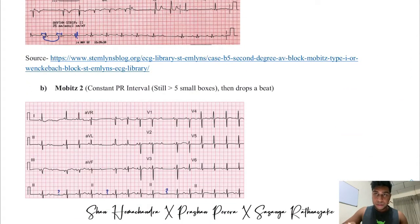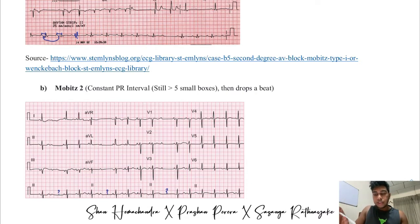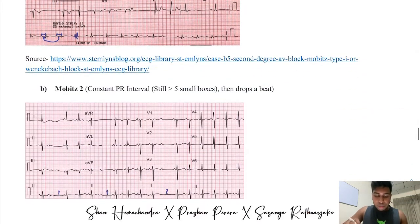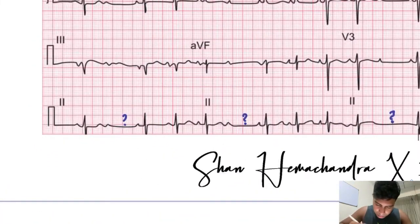In Mobitz Type 2, you get a constant PR interval and then a dropped beat. To clarify: in Mobitz Type 1, the PR interval gradually increases before dropping a beat. In Mobitz Type 2, the PR interval is constant but a beat is intermittently dropped.